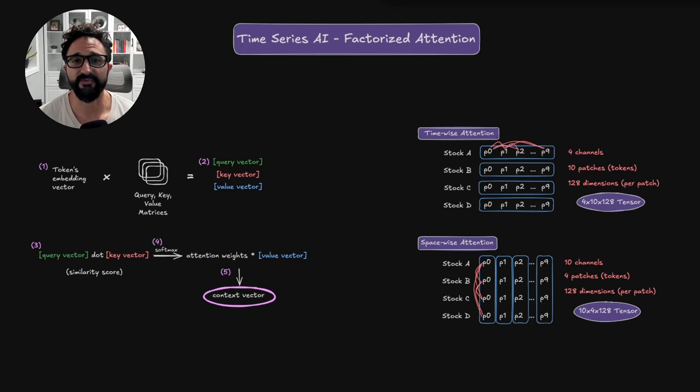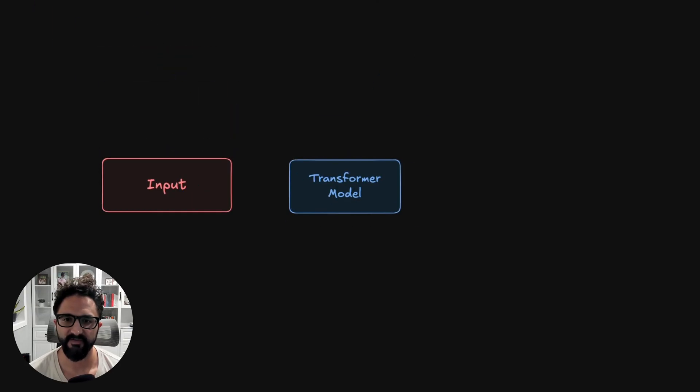Today we're going to dive deep into transformer models for time series data and look at a special type of attention variant called factorized self-attention. At a high level, a transformer model looks like this: you have some input that flows into your transformer model and you produce some output.